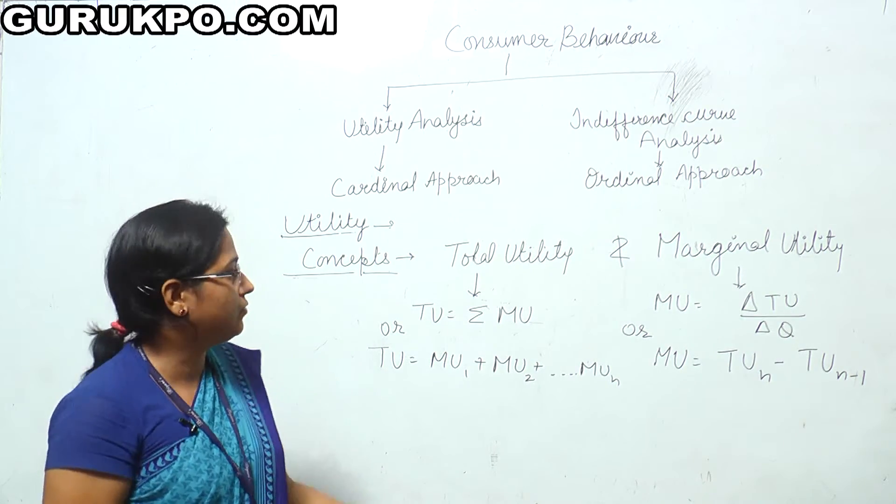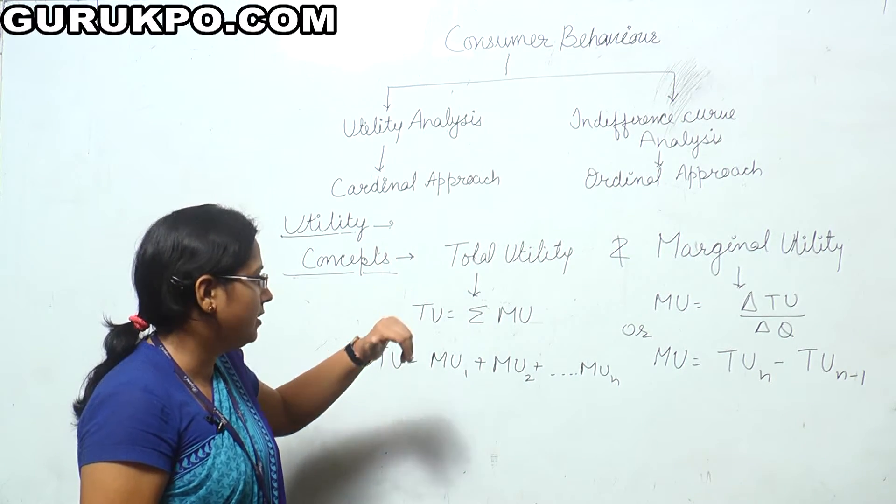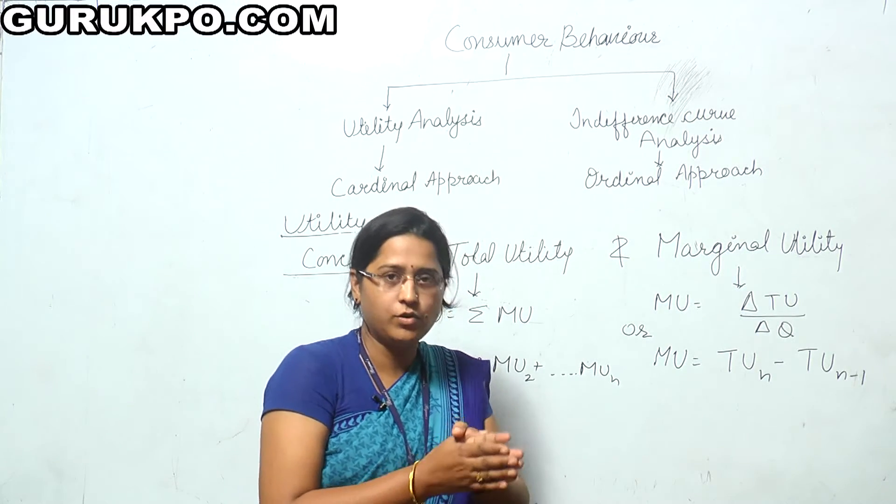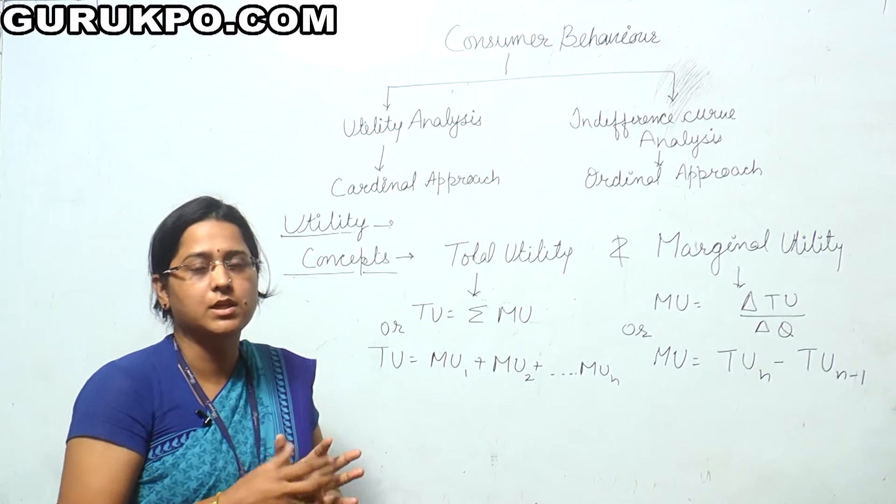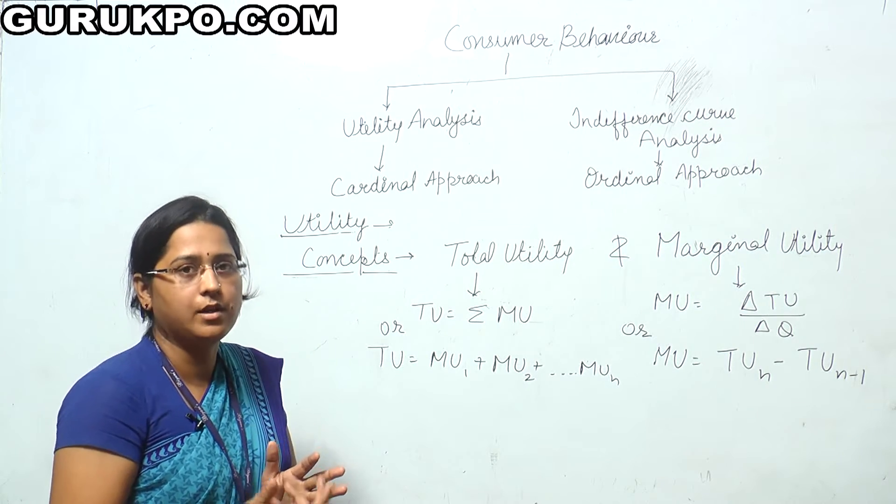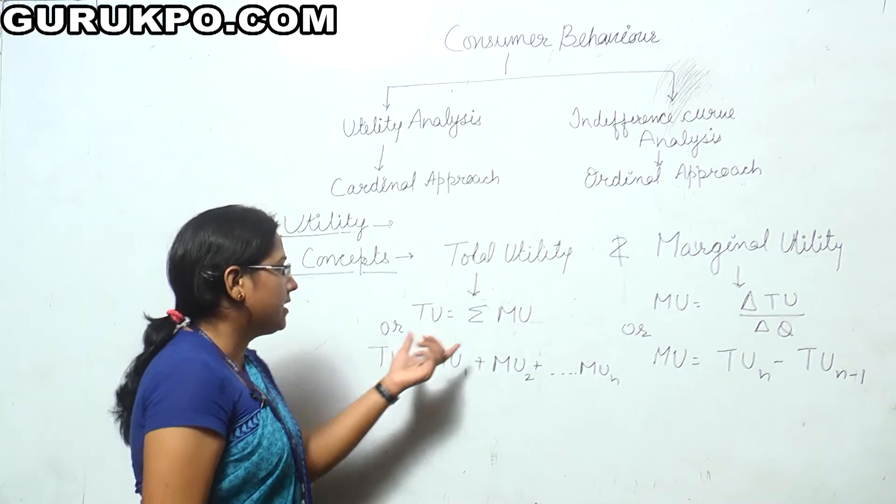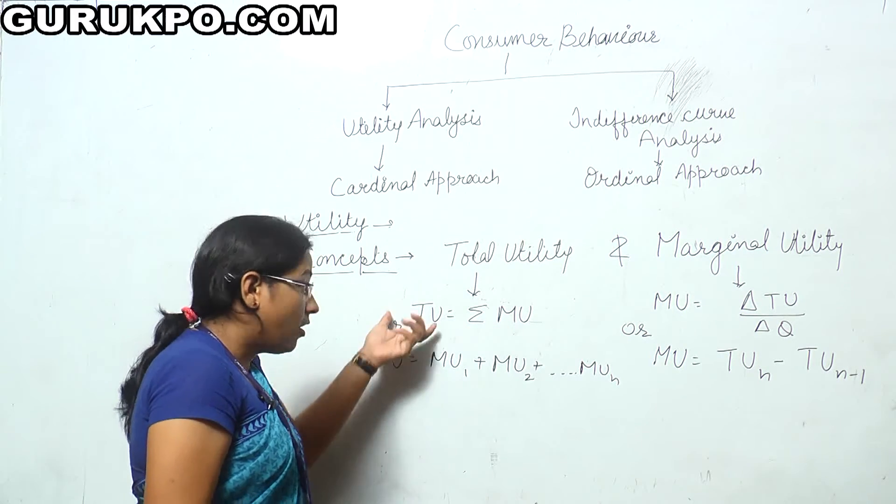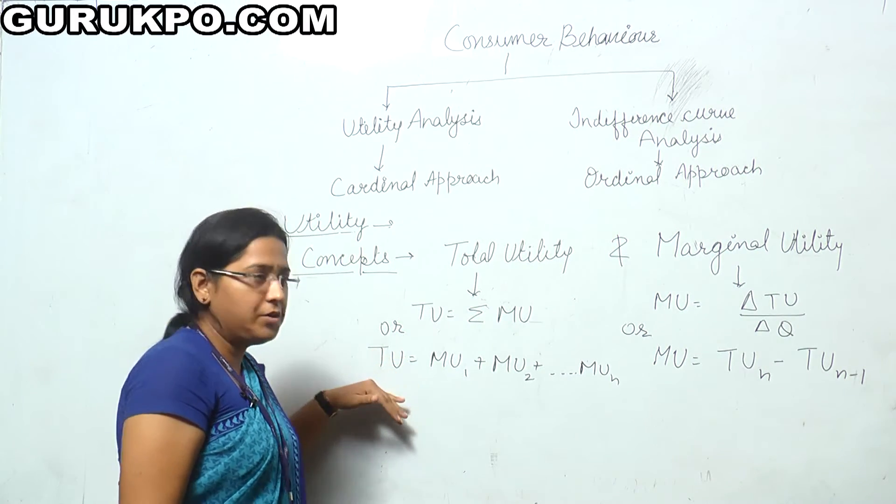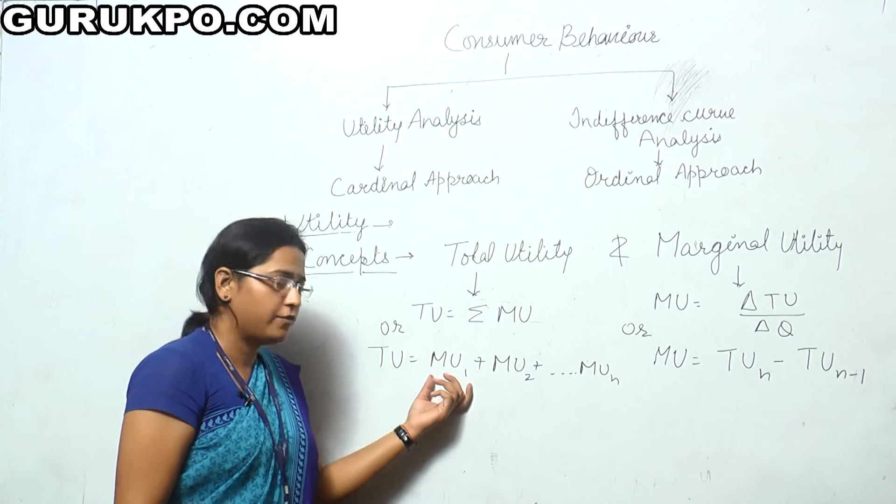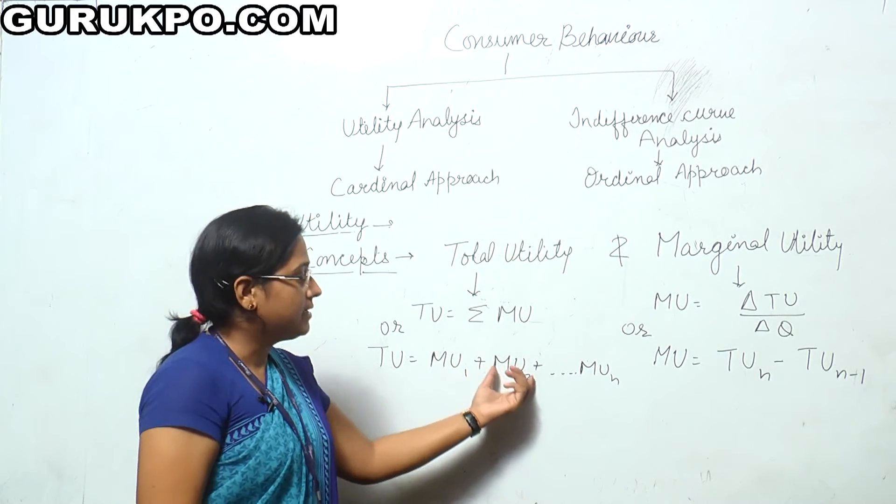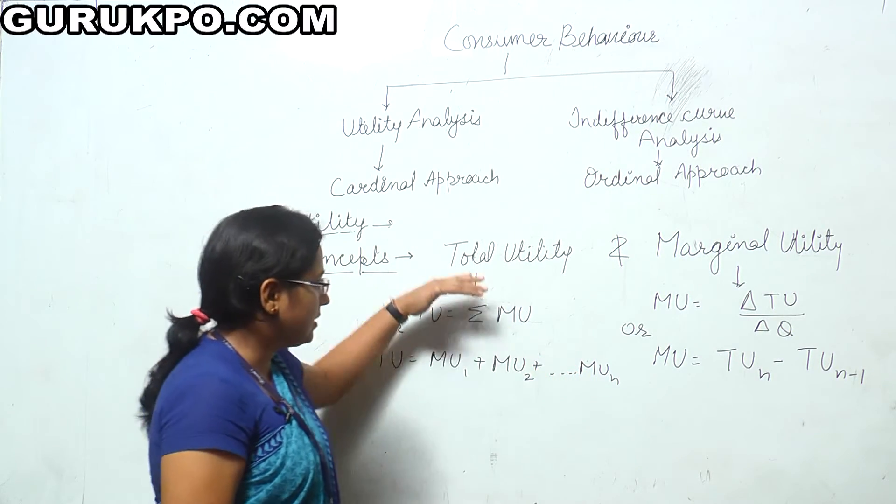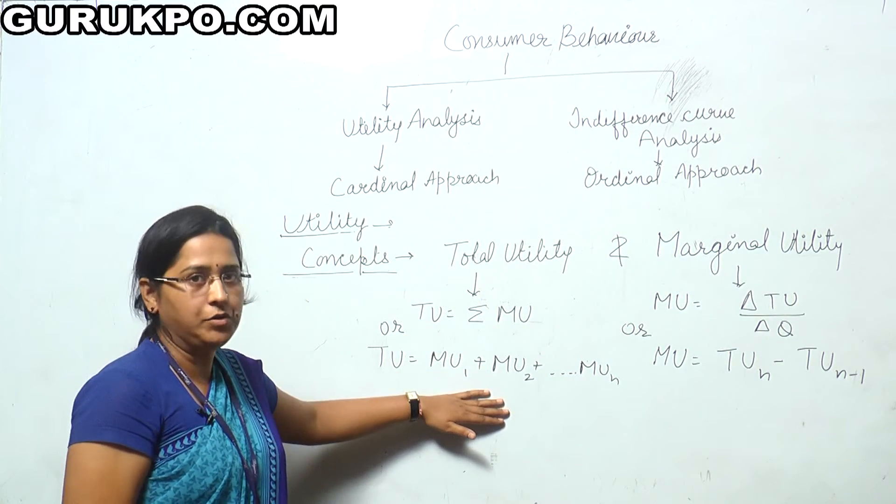Now we come to the total utility concept. Total utility is the summation of the total utility that we derived from the consumption of each and every commodity. That is sigma MU, MU is marginal utility. Or we can say that total utility is the summation of MU of one commodity, MU of second commodity and so on MU of n commodity. This is the concept of total utility.